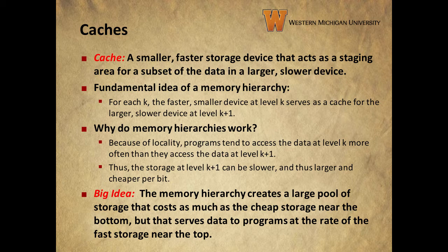Hierarchies work because of the locality we discussed in the last video. Because of locality, the data at level K tends to be accessed more often than data at level K plus 1, so the storage at K plus 1 can be larger, slower, and less expensive per bit. All of this comes together to create a hierarchy that creates a large pool of storage that costs as much as the least expensive storage toward the bottom of the pyramid, but serves data to programs at the rate of the fastest, more expensive storage devices near the top of the pyramid.